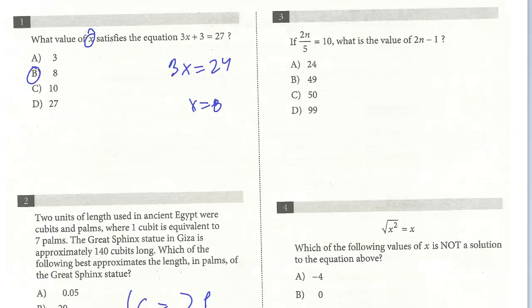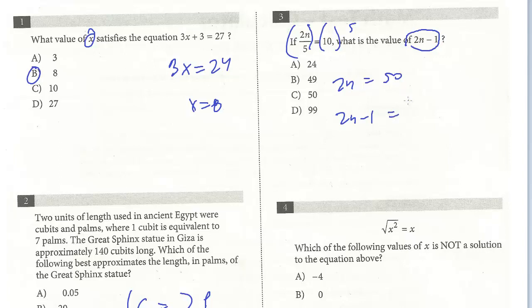All right, let's take a look at number three. If 2n/5 = 10, what's the value of 2n - 1? Here's an example where they're not just asking for n, but 2n - 1. You have to solve for that. Just pay attention. The first step is to multiply both sides by 5 to clear this denominator. On the left, I get 2n = 50. Then to get 2n - 1, we subtract 1 from both sides. 50 - 1 is 49, answer B.